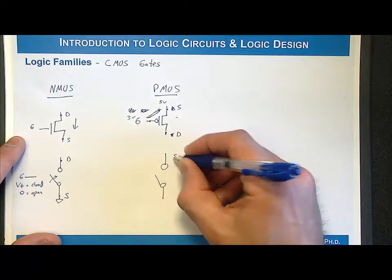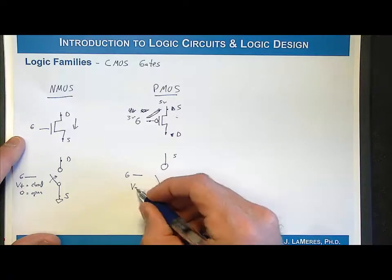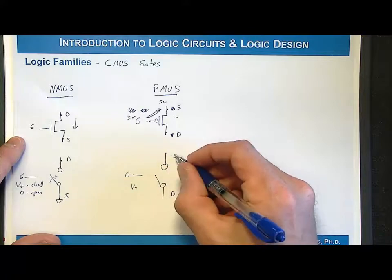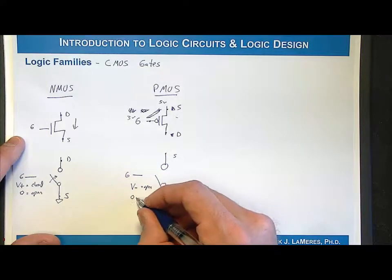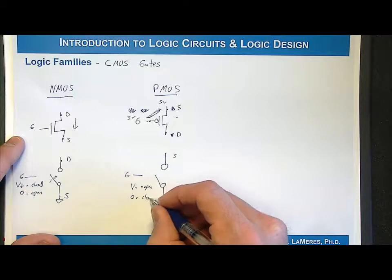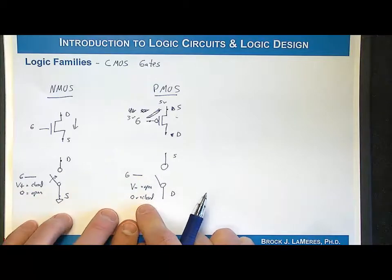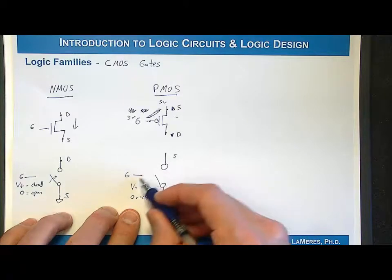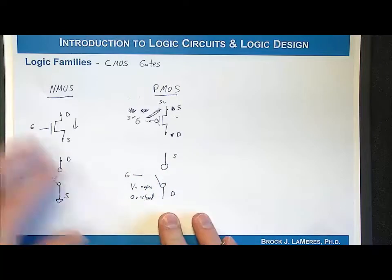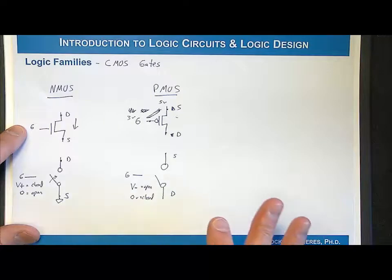If we think about the switch notation for the PMOS, we have a switch with the source up top and the drain below, with a control gate. When you have a negative voltage relative to the source, this switch would be open. When you have 0 volts relative to the source, it would be closed. This brings us to the fundamental principle of CMOS: how do we construct these gates to give us the simplest system possible?